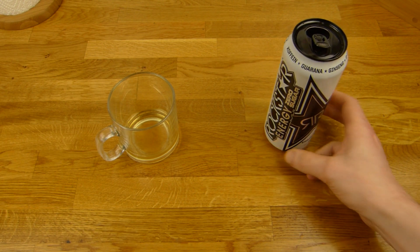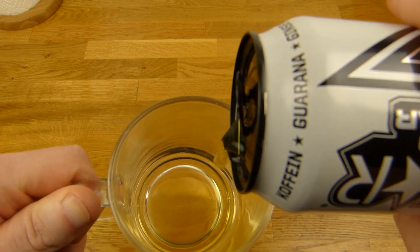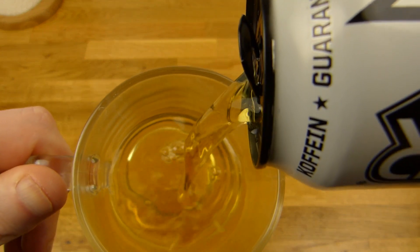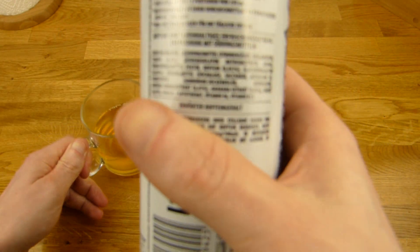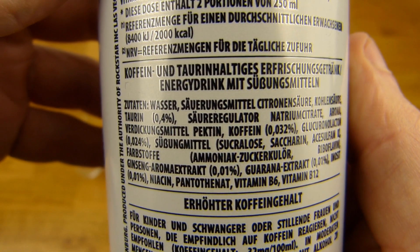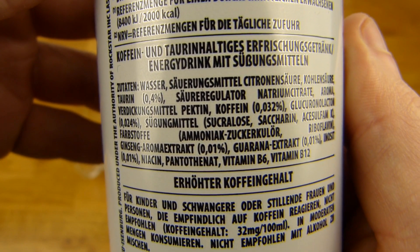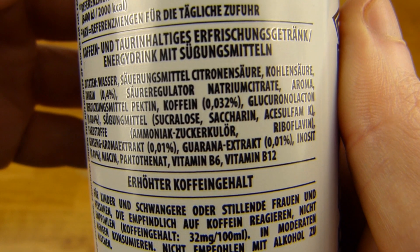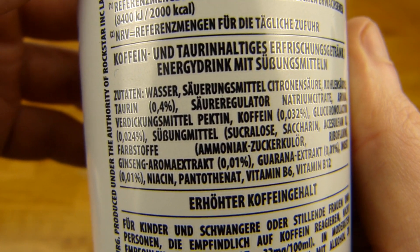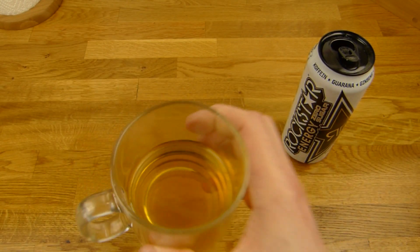Aber ich wusste nicht genau was mich für den Geschmack erwartet. Steht ja nichts drauf. Ich werde jetzt mal eingießen. Aber wenn man sich schon die Farbe anguckt. Okay. Dann kann man den schon erraten. Und wenn man sich Zutaten anguckt. Dann wird man wahrscheinlich auch denken. Aha. Das könnte so und so schmecken. Drei Süßstoffe sind drin. Sucralose, Saccharin. Und Acesulfam-K. Und Farbe. Ginseng Aroma Extrakt.